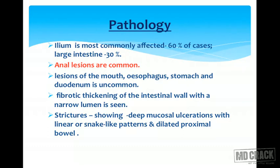The ileum is the most commonly affected part, found in 60% of cases, and the large intestine in 30% of cases. Lesions of the mouth, esophagus, stomach and duodenum are uncommon, but anal regions are common. Fibrotic thickening of the intestinal wall with a narrow lumen is seen. Strictures showing deep mucosal ulceration with a linear or snake-like pattern and dilated proximal bowel are seen.